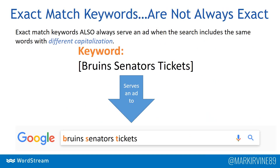The first and least controversial change is that exact match keywords are going to serve an ad when the search term matches the words but with different capitalization. So 'Bruins Senators tickets' in capitals will match to the lowercase version. I don't anticipate this having grave effects — if anything, it gets us to reach more searches from people who are effectively looking for the same thing but typing in different cases.